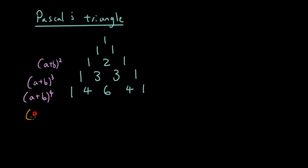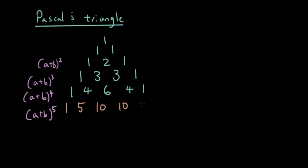So if we want to know a plus b to the power of 5, we can just keep going for another row. So I have 1, 1 plus 4 is 5, 4 plus 6 is 10, 6 plus 4 is 10, 4 plus 1 is 5, and 1. So the coefficients are 1, 5, 10, 10, 5, 1.